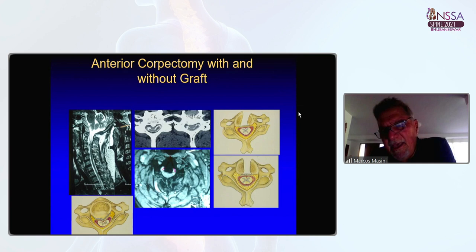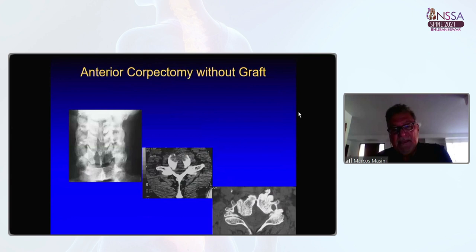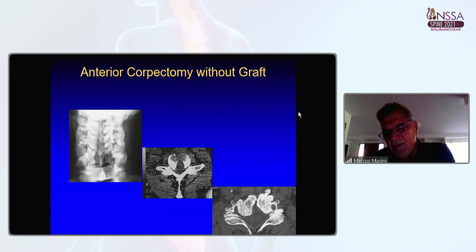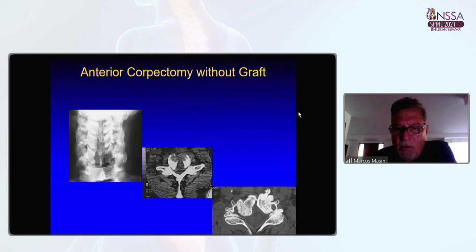Usually the patient has arthrodesis due to the degenerative process with osteophytes bilaterally and posteriorly, so we go in on a patient with a stable spine. This indication for corpectomy only without a graft is a procedure for patients who have a stable spine — usually they don't have any more disc and no movement in that area. You can see that after three years, bone grew inside the opening we created but did not compress the spinal cord.